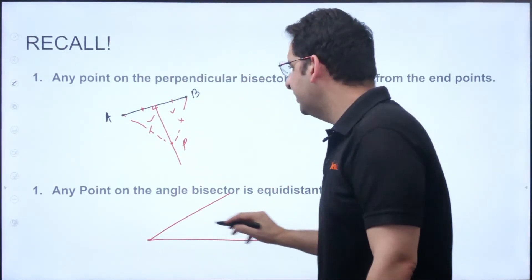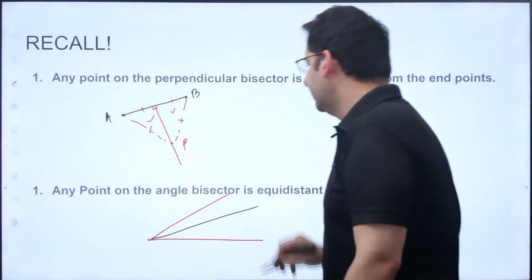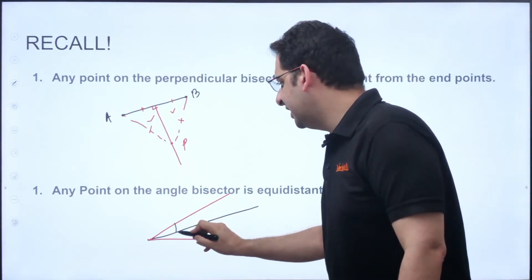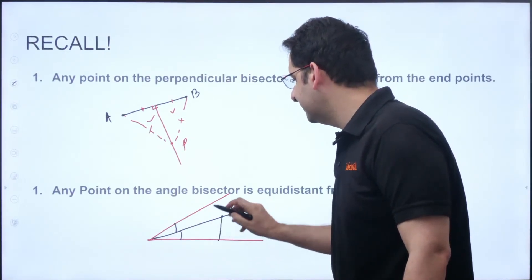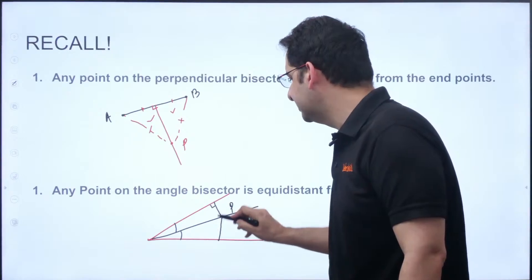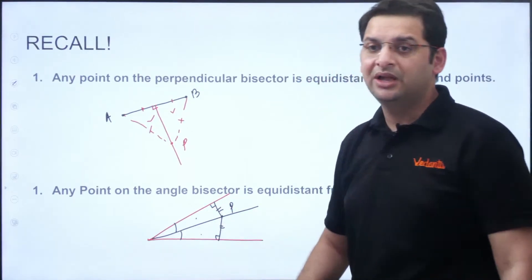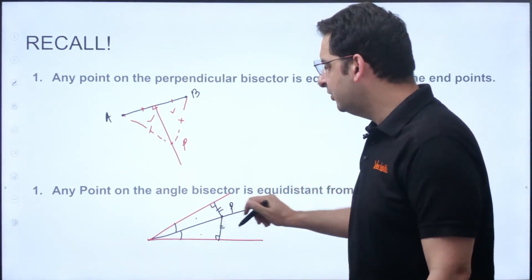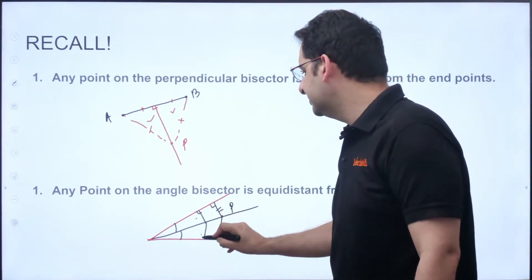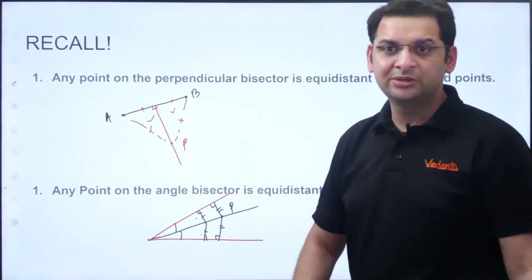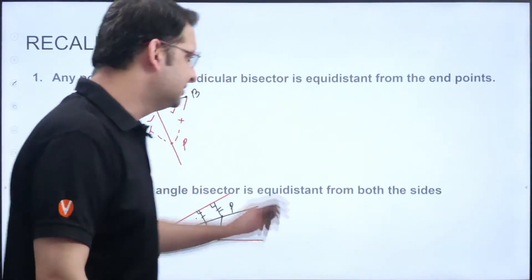The second point is: any point on the angle bisector is equidistant from both the sides. So if you have an angle and you draw the angle bisector, and you take any point P on it, the perpendicular distance from P to the two sides is always the same. This can be easily proved with the fact that the two triangles formed are congruent to each other. So these are the two important points — remember them always.